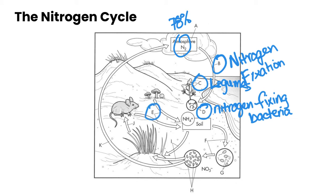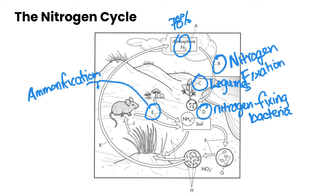For label E, you can also fix nitrogen to make it into ammonia in a process called ammonification. The soil is a major reservoir for ammonia and other nitrogen-containing compounds, and that process will convert material into ammonia through ammonification.